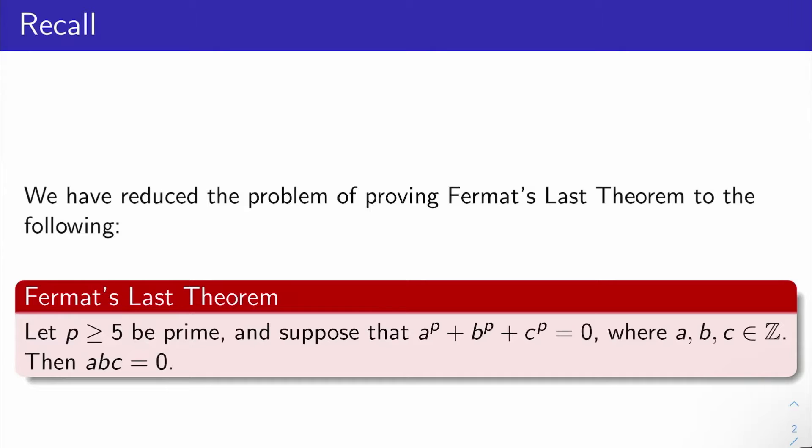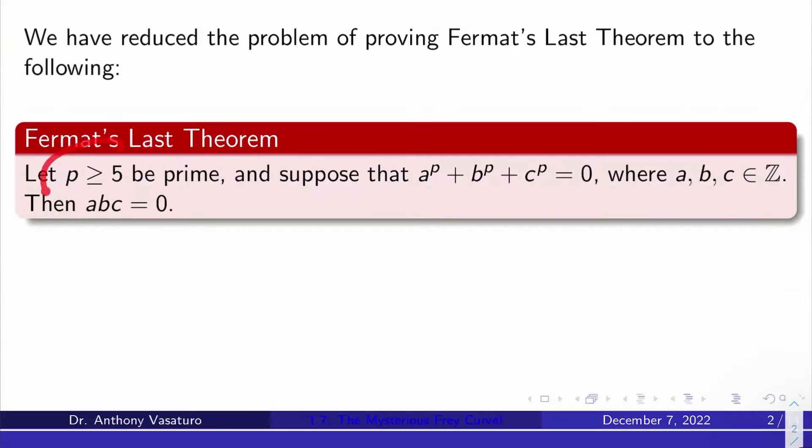We reduced the problem down to the following statement. Let p be a prime that's at least 5. Suppose a^p + b^p + c^p = 0, where a, b, and c are integers. Then at least one of a, b, or c is 0.